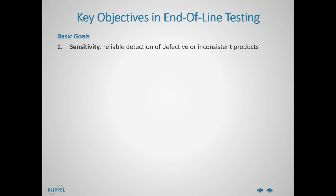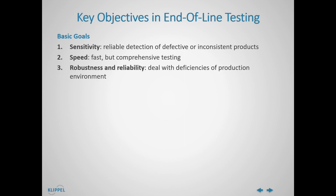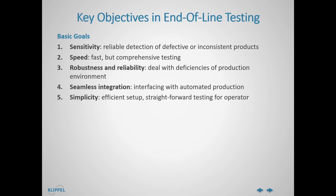So, what are the key objectives in QC or end-of-line testing in particular? We have some clear basic goals. In first place, the test system shall reliably detect any defect or inconsistency with the best possible sensitivity. Secondly, it is desired to fulfill this task within the minimum possible time span, in order to meet the cycle time requirements. Defects shall be detected reliably and repeatably without being falsified by external disturbance, such as ambient noise. We also need proper hardware and software interfaces to be able to integrate and control the test station in the automated production environment. Simplicity is one of the major keys for trouble-free and efficient setup and operation.